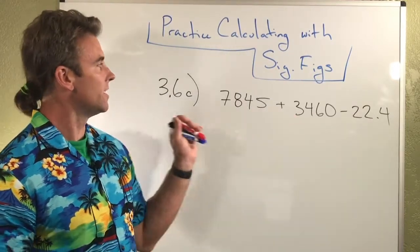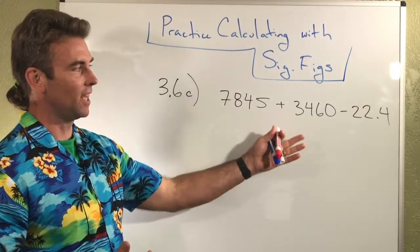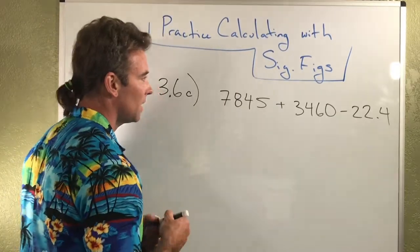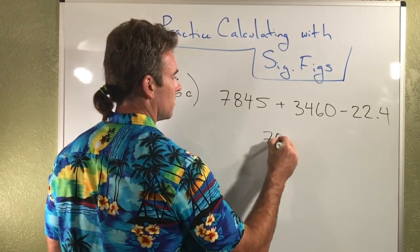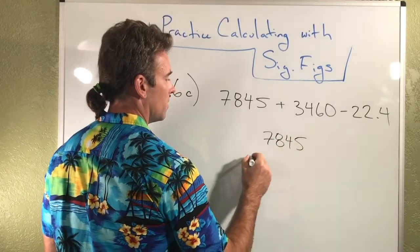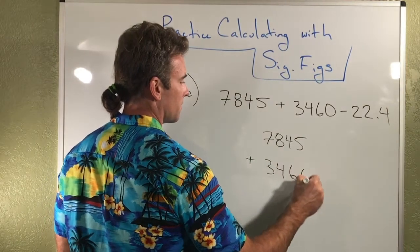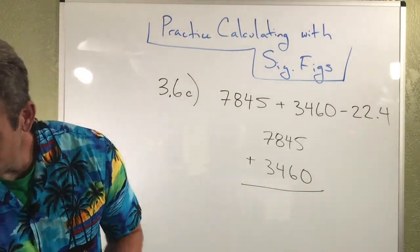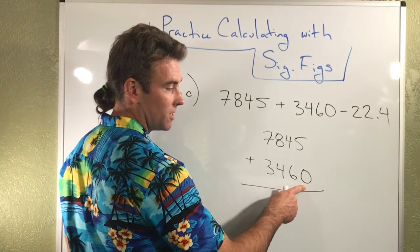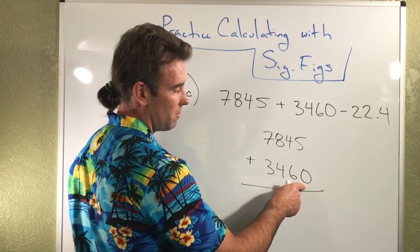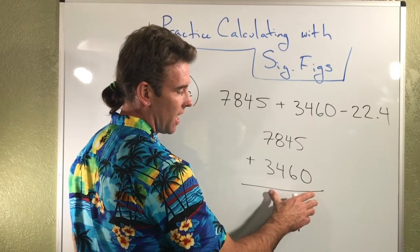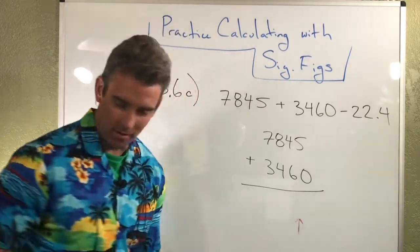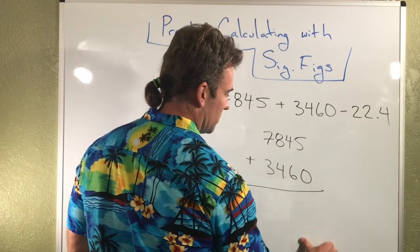So what we have here is 3.6C, which is obviously an addition and/or subtraction here. So the first thing we're going to do is we're going to line everything up. So we'll do the addition first. One of the things that is true is that when we line this thing up, you'll notice that that zero is actually insignificant. And so that means that whatever value we end up with has to be rounded to the tenths place.